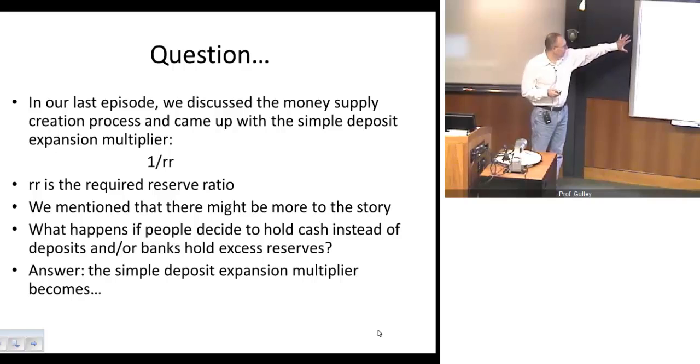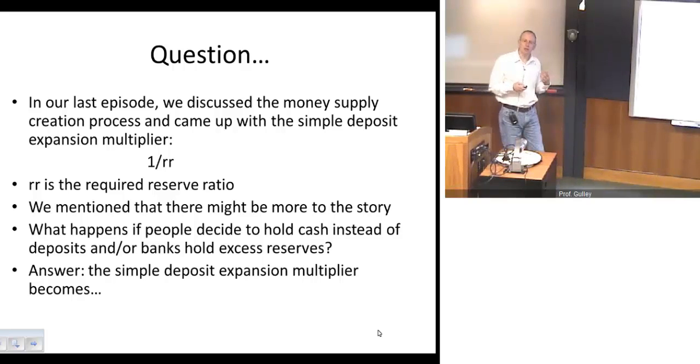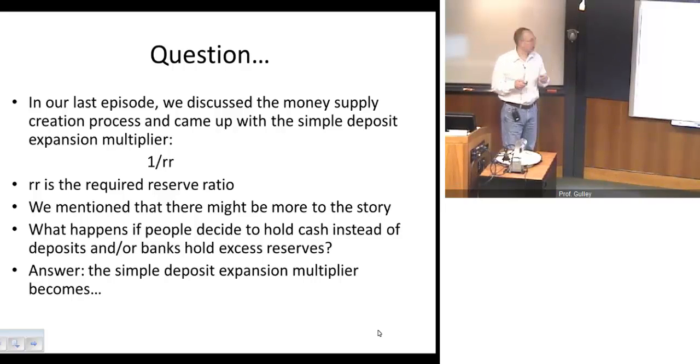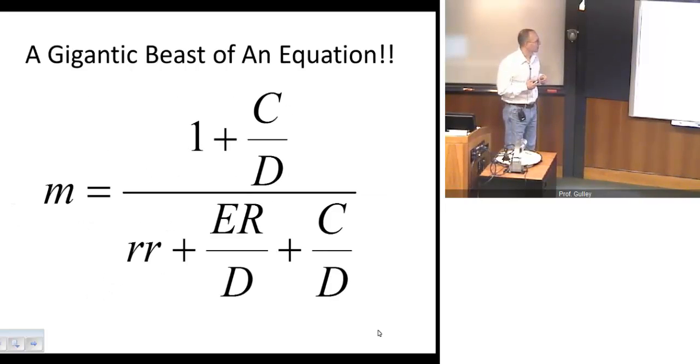So again, we came up with this simple formula here, and we talked about what happens if people decide to hold currency instead of depositing everything in a bank, and what happens if some banks hold excess reserves, reserves above and beyond what are required. It turns out that our Simple Deposit Expansion Multiplier becomes a little bit more complex. It becomes this nasty thing right here, but it turns out that this equation really is not very complicated at all and there's a great deal of intuition.